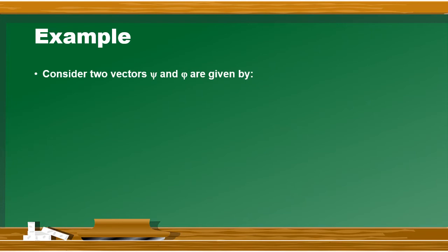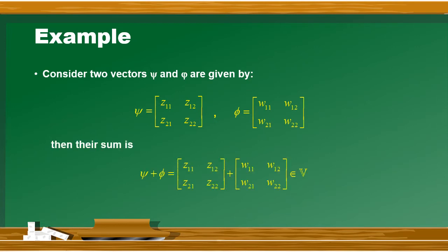For example हमारे पास दो vectors हैं psi and phi जिनकी values यह हैं - psi is equal to [z11, z12; z21, z22] and phi is equal to [w11, w12; w21, w22]. इन दोनों vectors को जब add किया जाएगा तो इनका sum कोई another vector बनेगा जो भी इसी vector space में ही exist करेगा. तो यहाँ पर closure property को prove किया गया है.